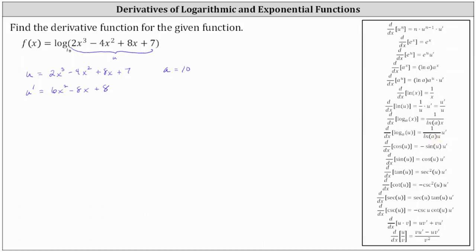So in our case, f prime of x equals one divided by the product of natural log 10 and u, where u is two x cubed minus four x squared plus eight x plus seven, times u prime, which is six x squared minus eight x plus eight.